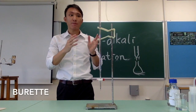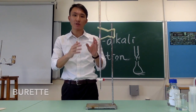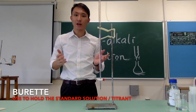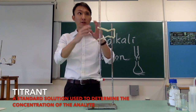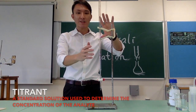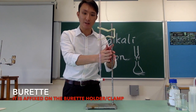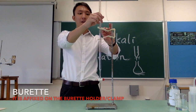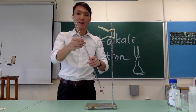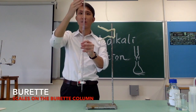The third apparatus is the burette. A burette is used to hold a standard solution or the titrant in a titration experiment. The burette is fixed by a burette holder on an iron stand. At the top is where we add the solution, and you will notice scales written on the body of the column.